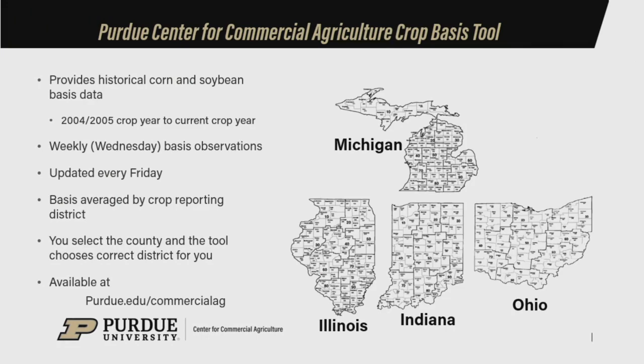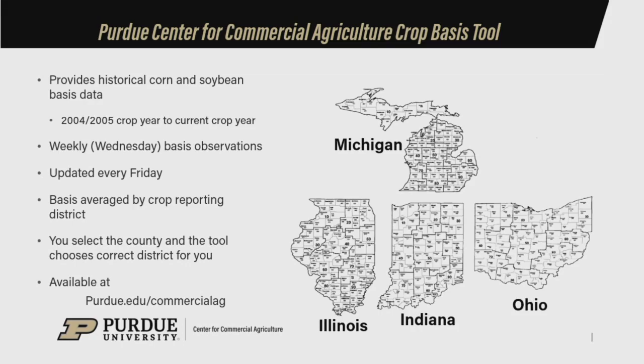We developed the tool in conjunction with some funding from USDA, and really the driver was a lack of historical basis data — particularly localized basis data — that we could leverage when going out and talking about crop marketing. We compiled the data from DTN, a large ag data company. The tool covers four states: Illinois, Indiana, Ohio, and Michigan. The way we localized was at the crop reporting district level — a much more fine-tuned measure than at the state level. We could have come up with an Indiana state average basis, but localized information was a lot more valuable, so the crop reporting district level is where we settled.